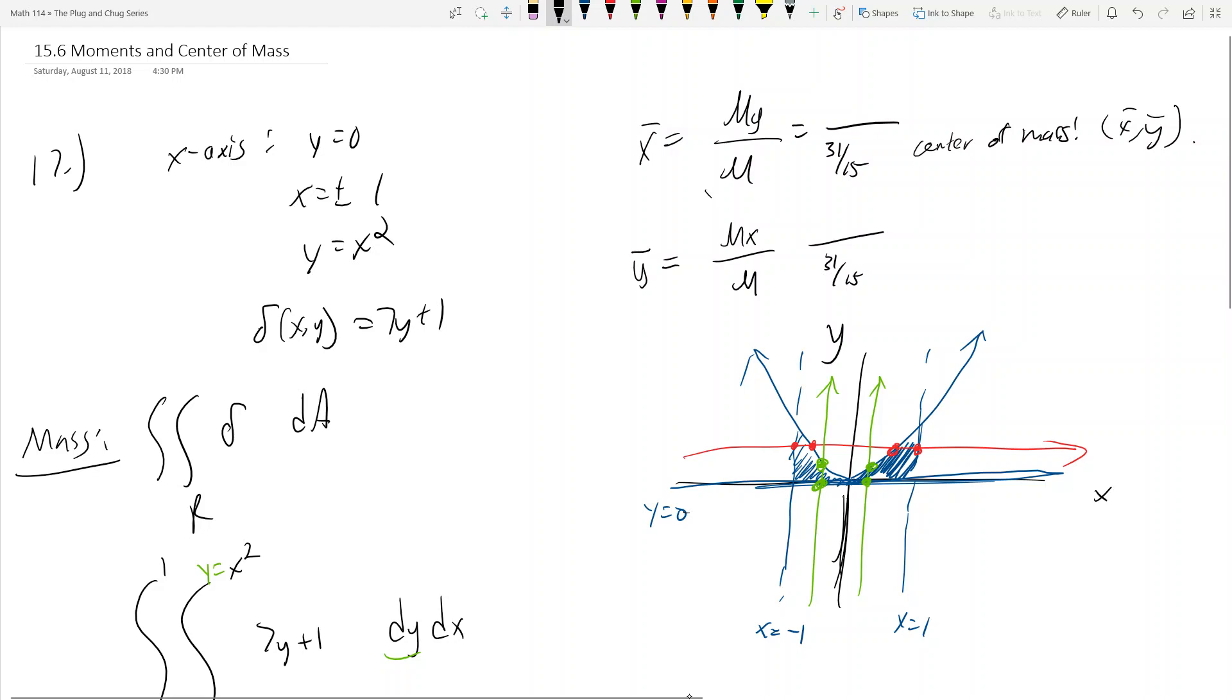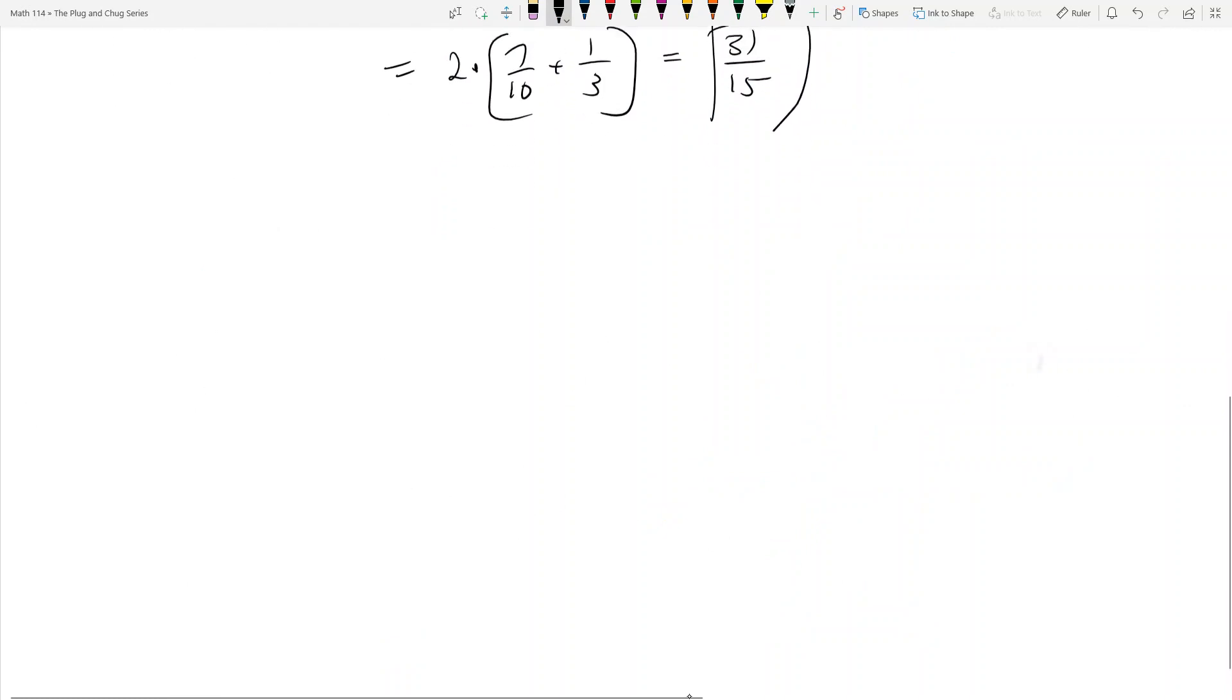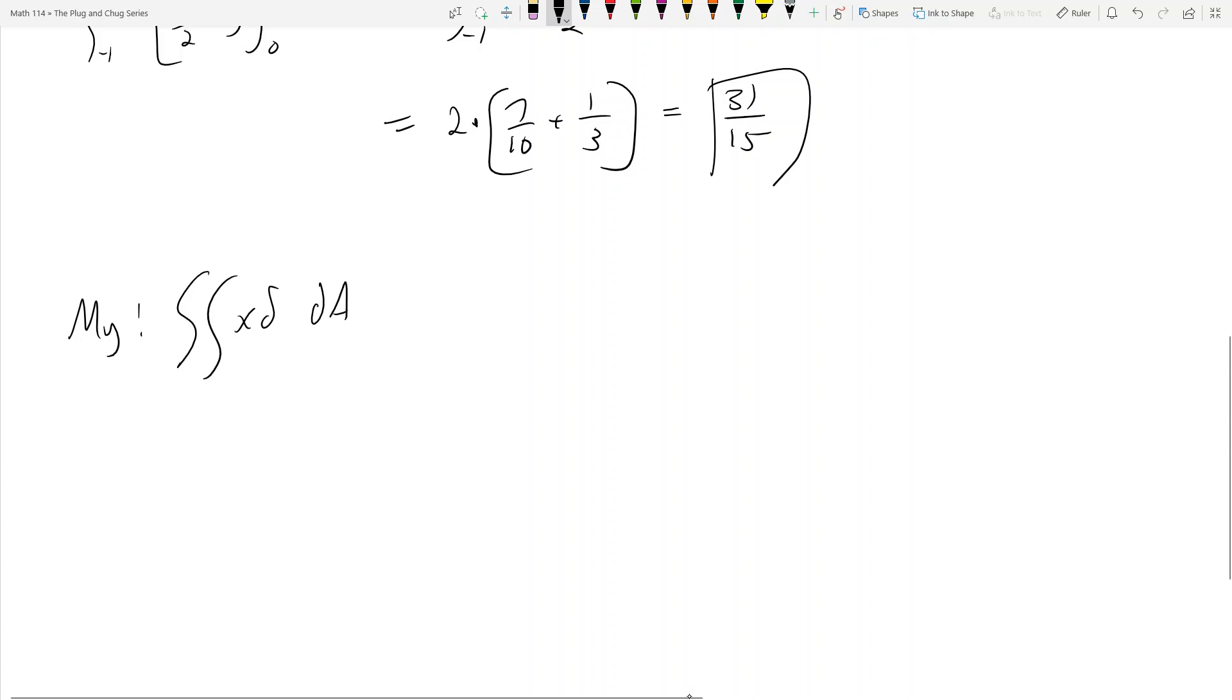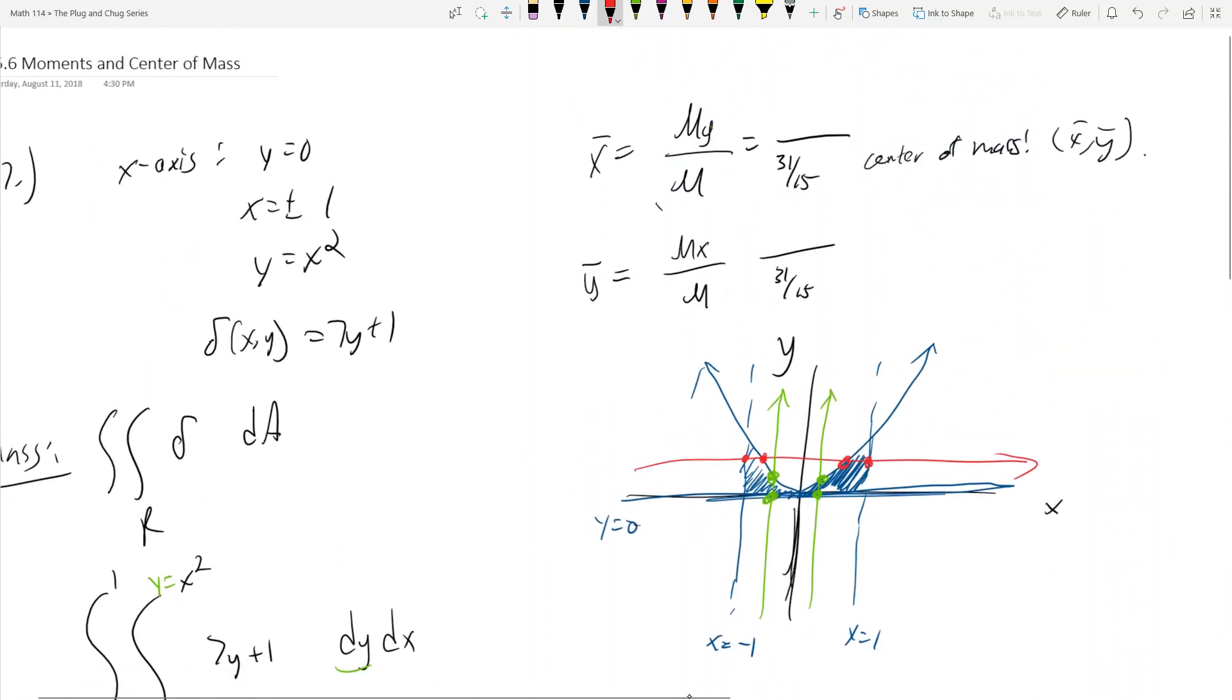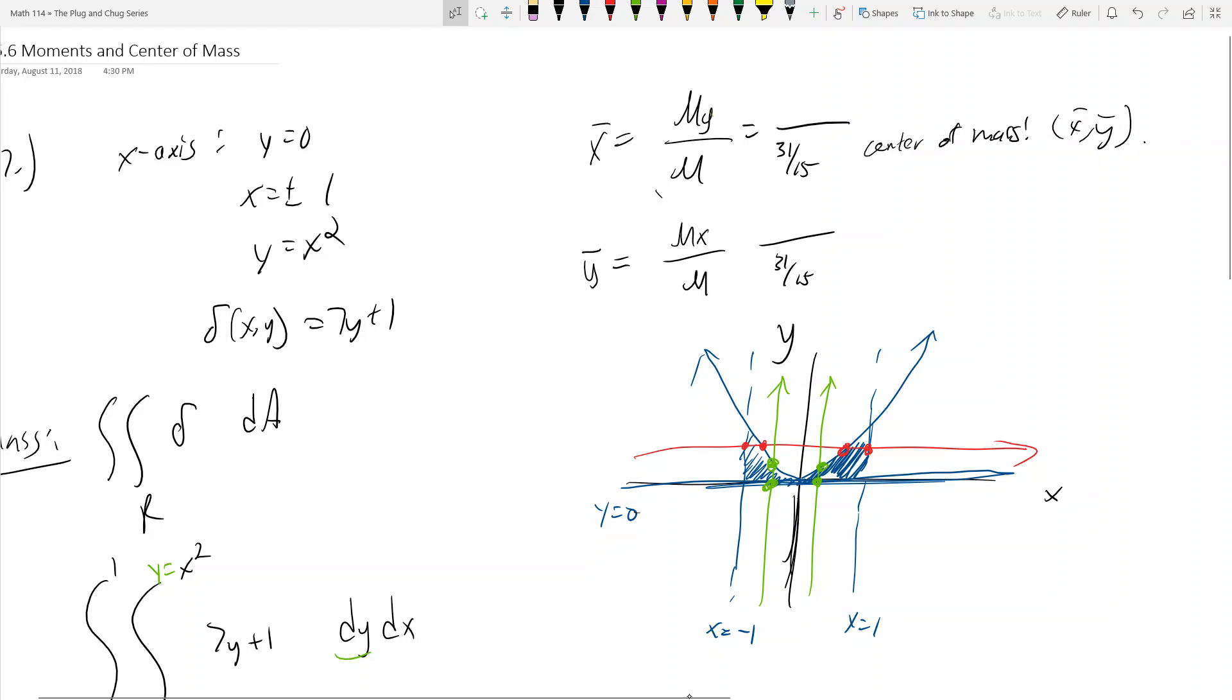So here's my double integral, and now I've just got to evaluate this guy. This is the integral from negative 1 to 1. This becomes 7y squared over 2 plus y evaluated from 0 to x squared dx. That's negative 1 to 1, 7x to the 4th over 2 plus x squared. Now we can actually integrate this, and you get 7x to the 5th over 10 plus x cubed over 3 from negative 1 to 1. And that ends up equaling 2 times 7 tenths plus 1 third, which looks like it ends up being 31 over 15. So the mass is 31 over 15.